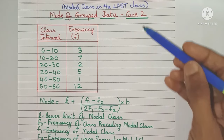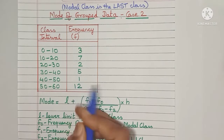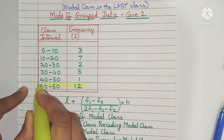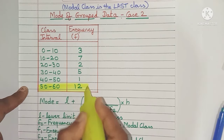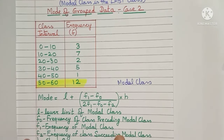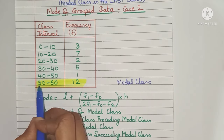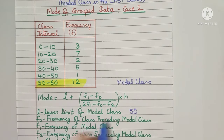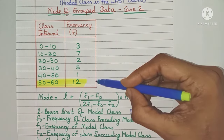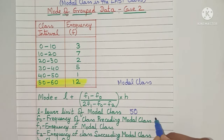Let's consider the case where the modal class is the last class. As you can see, 12 is the maximum frequency value, so the mode value will lie here — let's highlight it as our modal class. L is the lower limit of the modal class, which is 50, so L = 50. F0 is the frequency of the class preceding the modal class, which is 1, so F0 = 1.